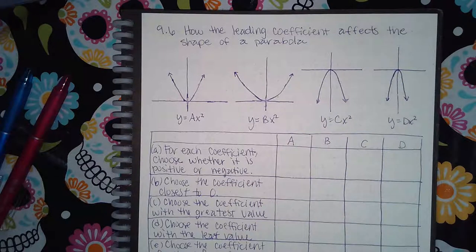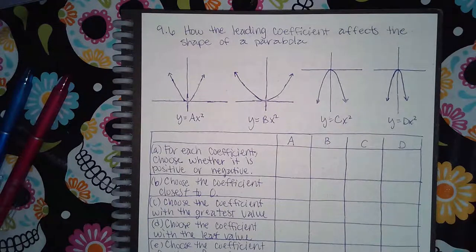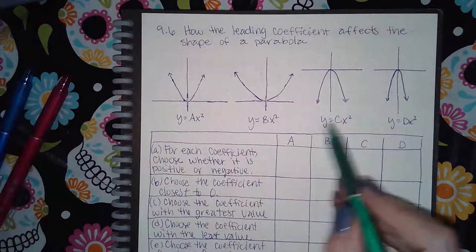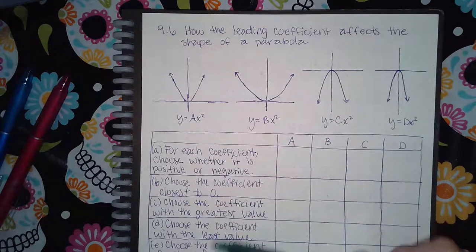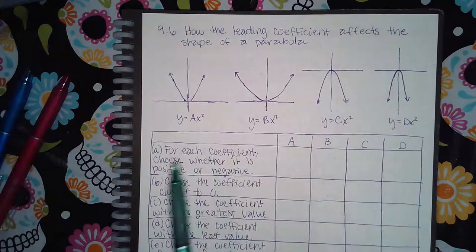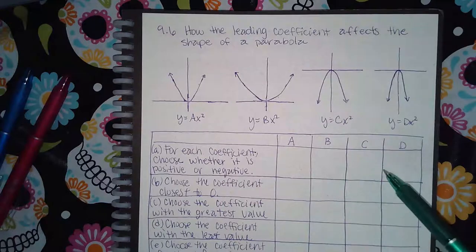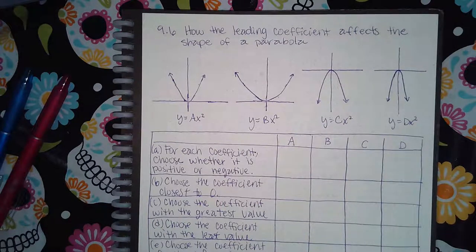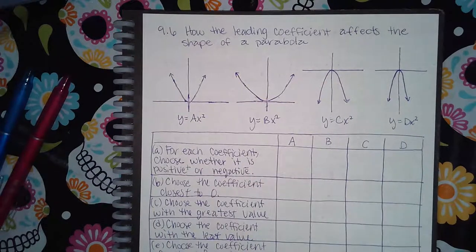Here we have how the leading coefficient affects the shape of a parabola. We have all of these parabolas and they want us to fill in the correct boxes here. So it says for each coefficient choose whether it is positive or negative. You'll have a dropdown there to select positive or negative. For me I'm just going to put a plus sign for positive and a minus sign for negative.